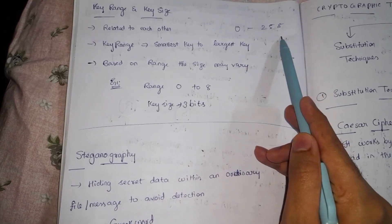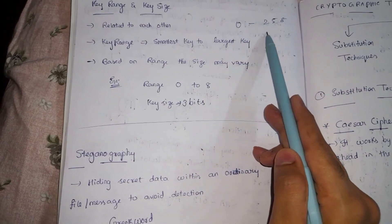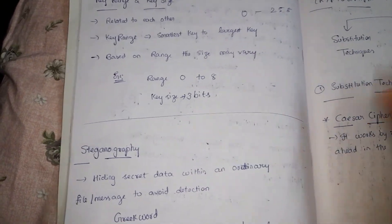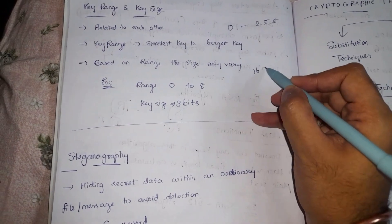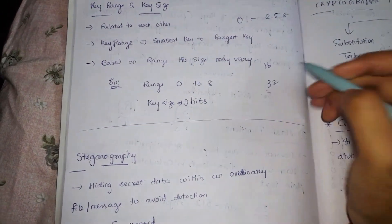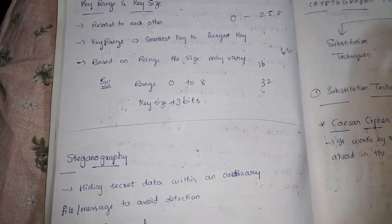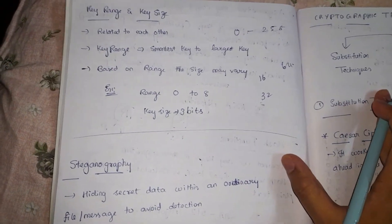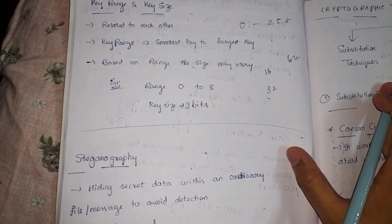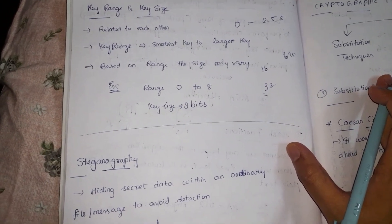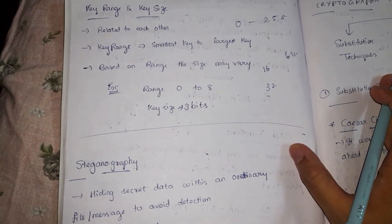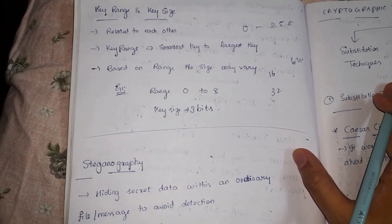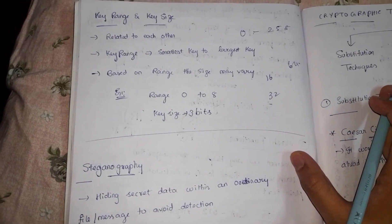Given that range — considering 0 and 255 — the size of the key can be varied. It can be 16 bits, 32 bits, 64 bits, or more. Now, why do we have to discuss key range and key size? For a cryptographic algorithm to be more complex and effective, the key range and key size should be larger. The more the range, the more the complexity.